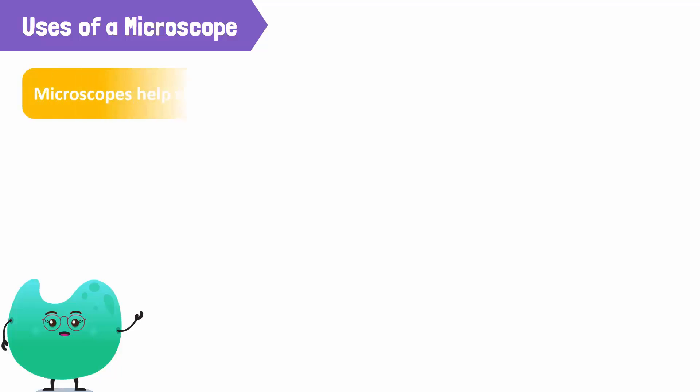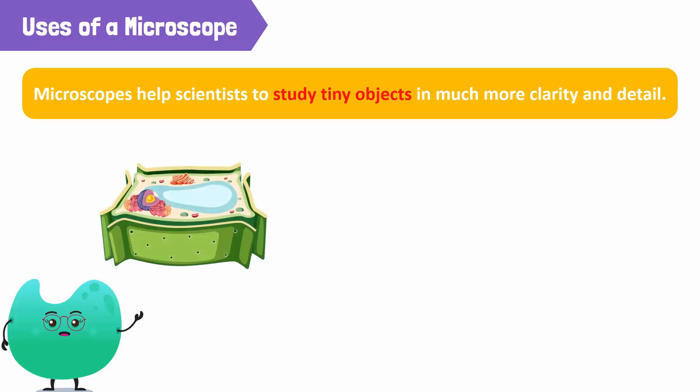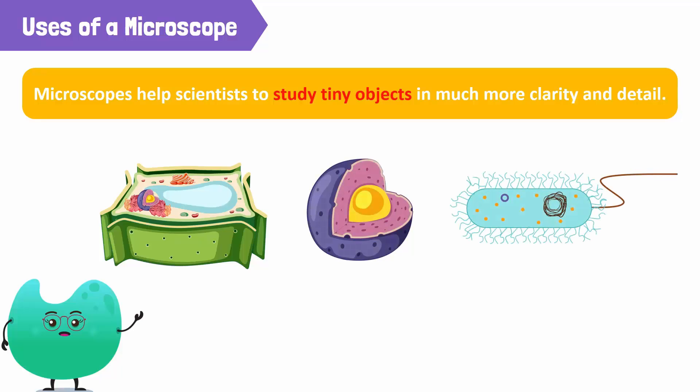Microscopes help scientists to study tiny objects in much more clarity and detail. They have helped scientists study cell organelles like nuclear membrane and even the smallest structures like bacteria.